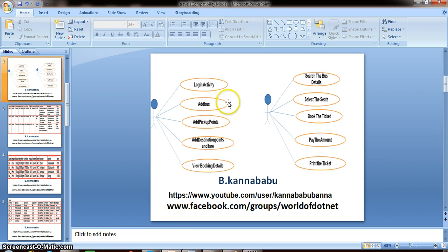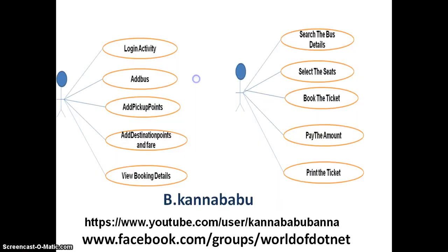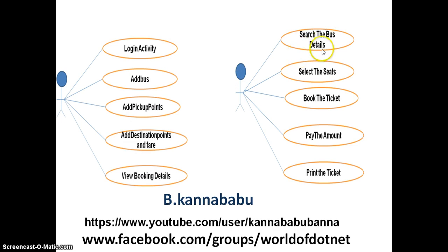Basically in the project there are two types of users. One is administrator and the other one is customer, that is a simple user. The role of administrator is: admin will log in and he will add the bus details, he will add the pickup points, he will add the destination points, and he can view the booking details. Whereas a customer can search the bus details, select the seats, book the ticket, pay the amount, and get the print of the ticket.